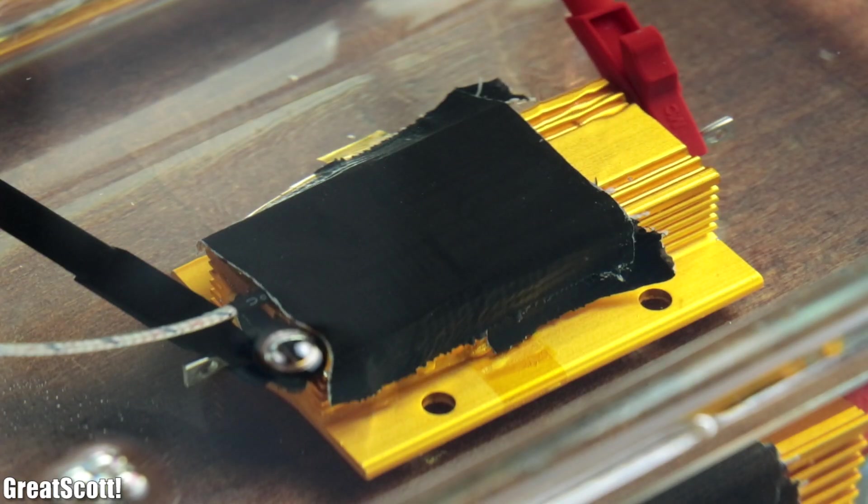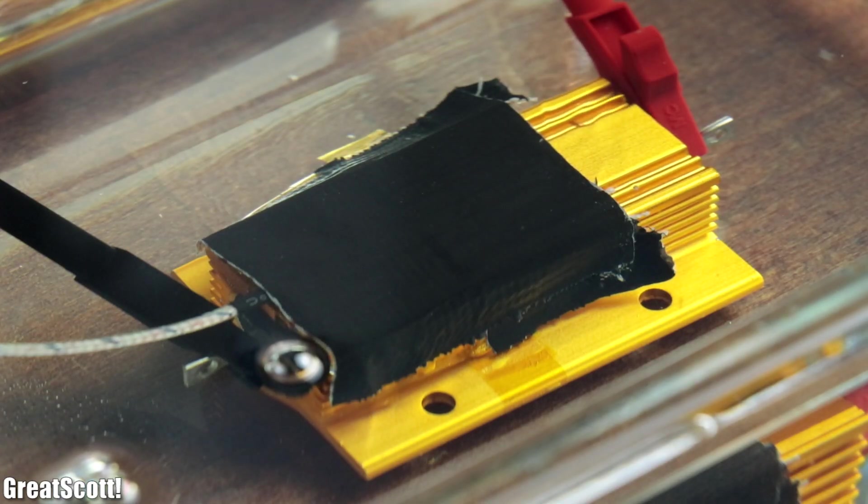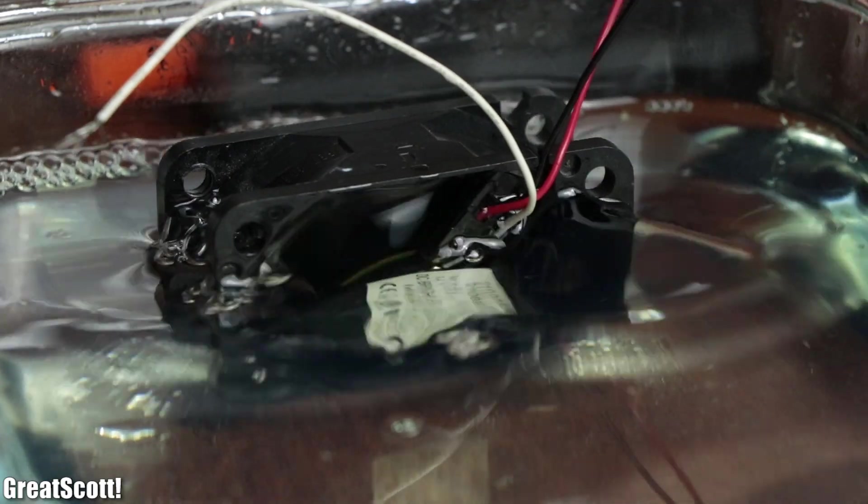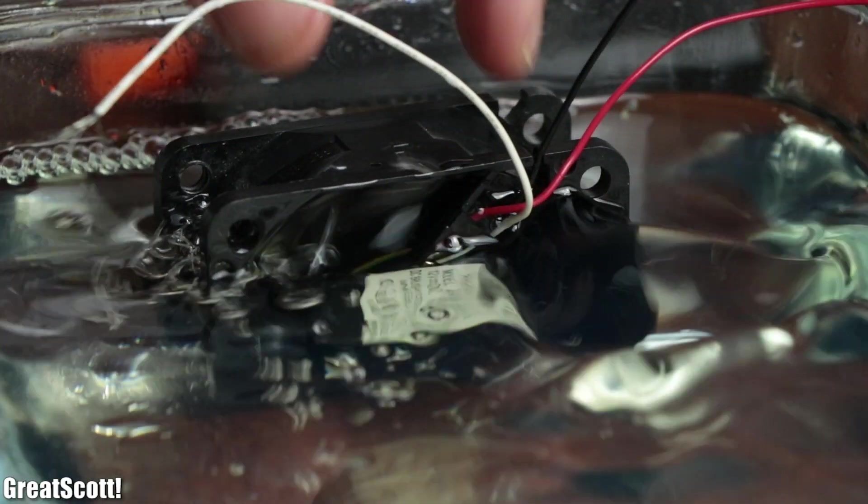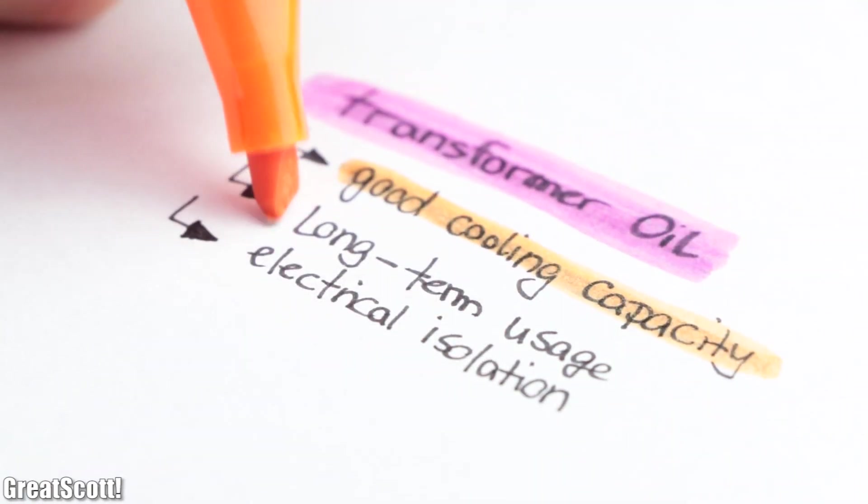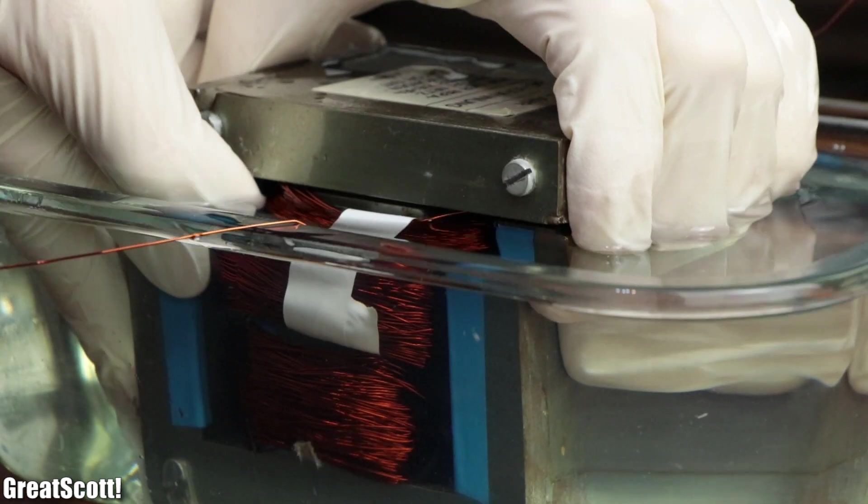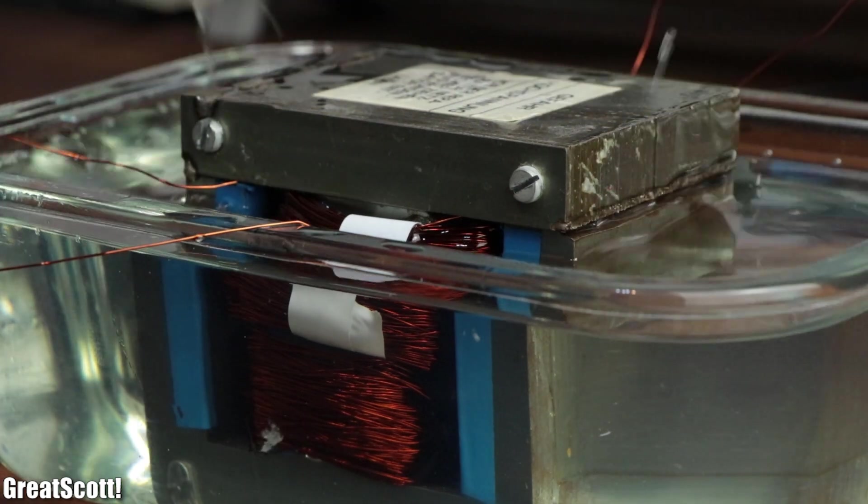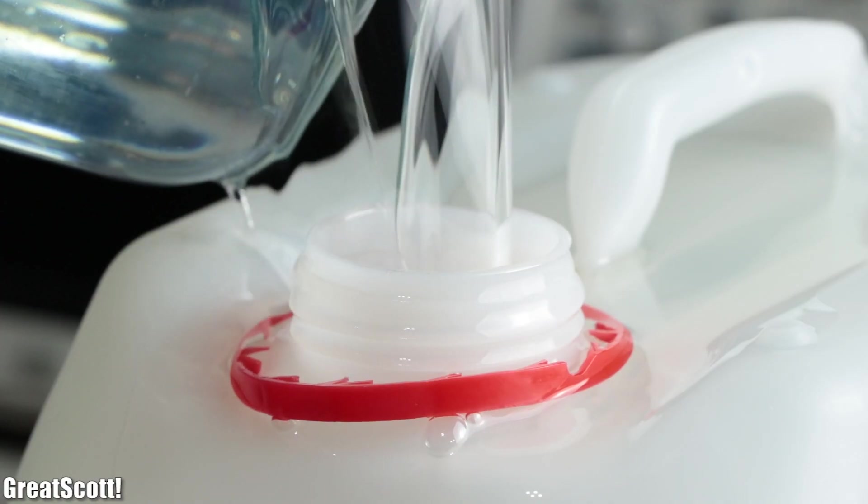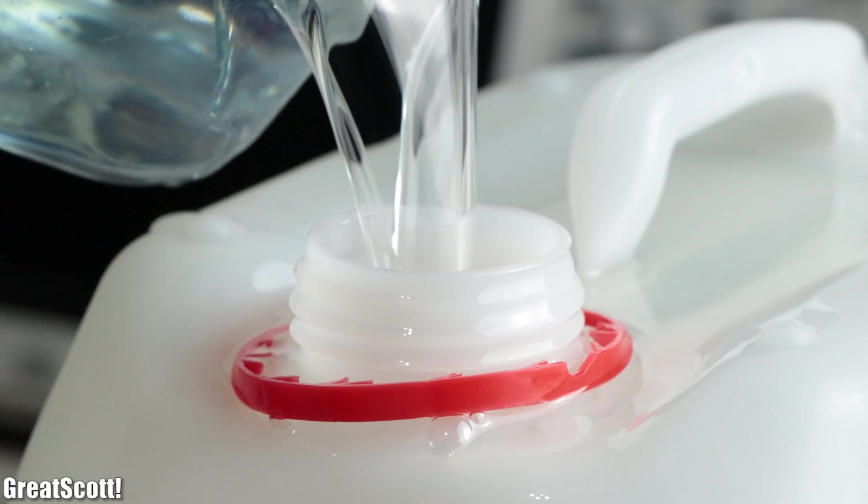But even though the transformer oil is not the winner of this experiment, it is clear that in combination with its other properties, like the long term usage and electrical isolation, that it is suitable to, for example, submerge big high power transformers in it, which not surprisingly is where this oil got its name from.